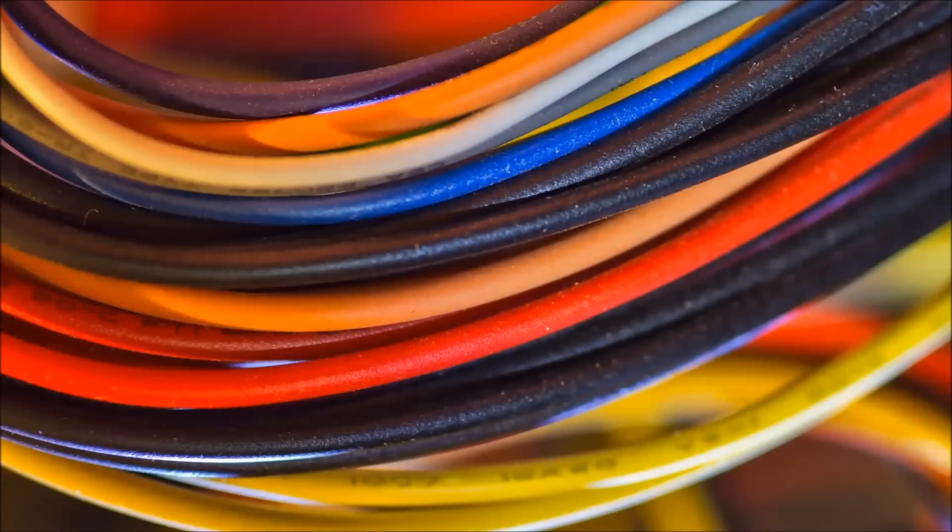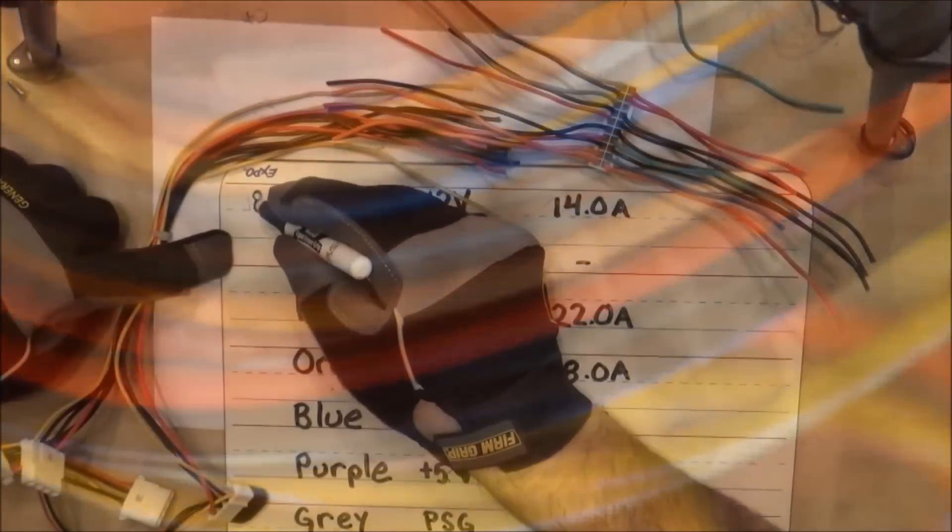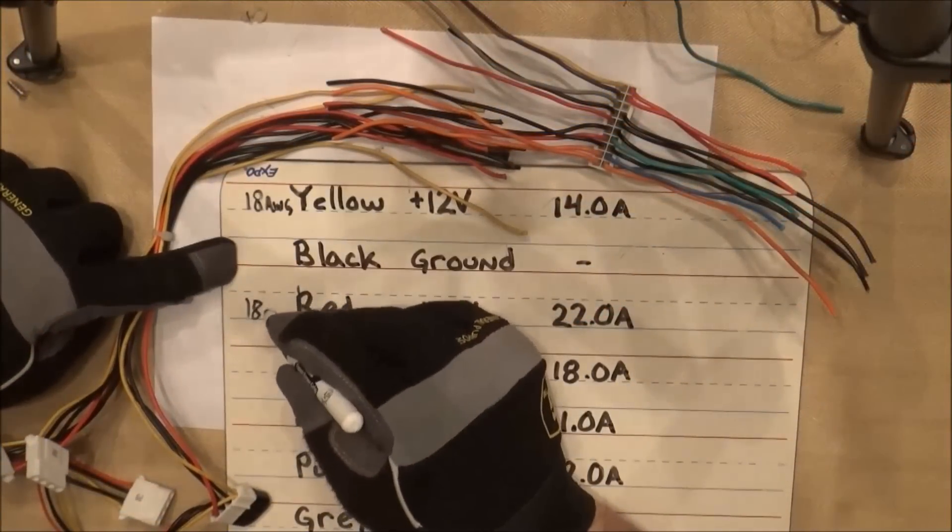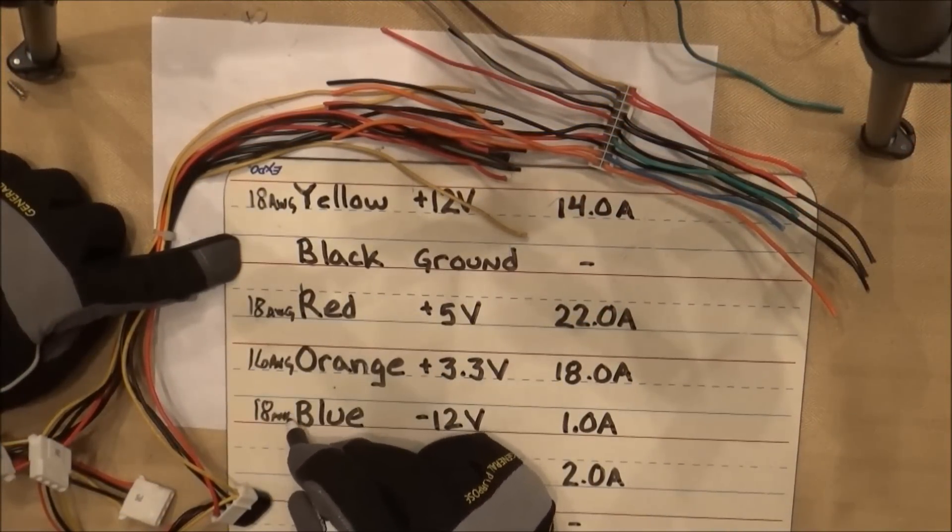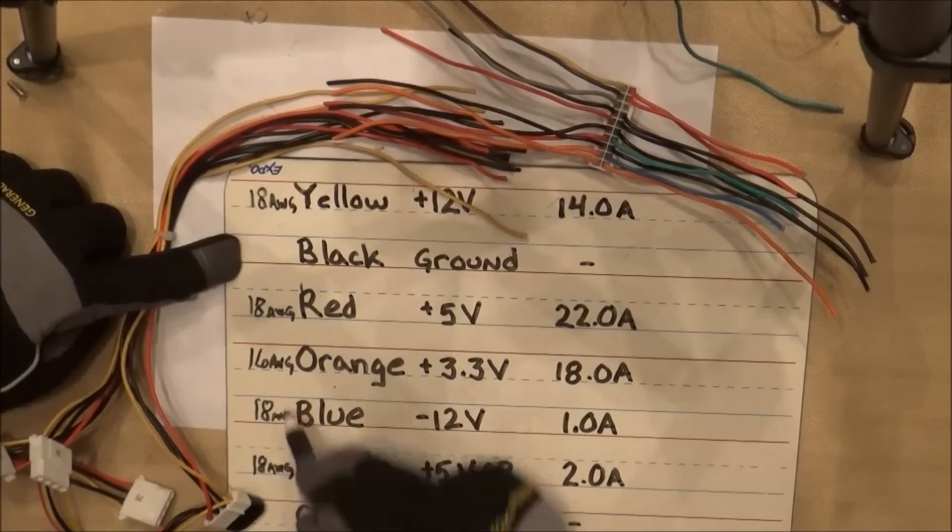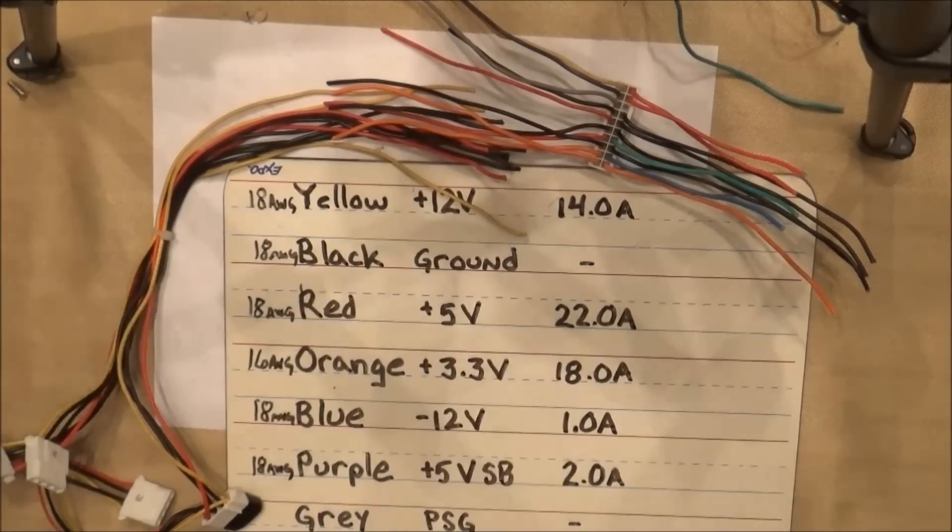Next, inspect your wires to find the size. You'll be looking for an AWG rating on the wires. As you can see here, all of the wires are 18 AWG, except for the orange wires which are 16 AWG.